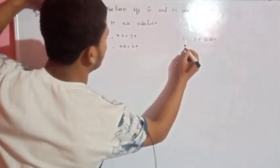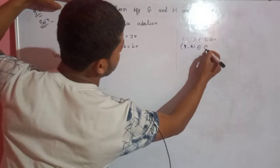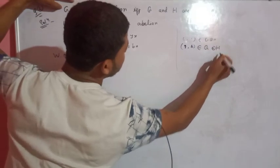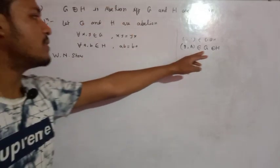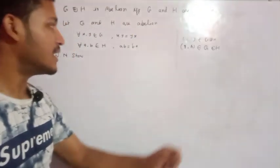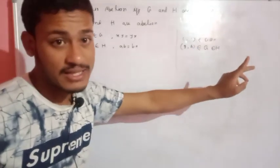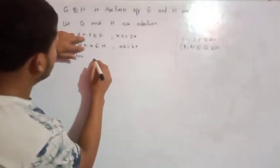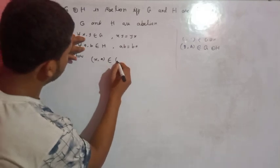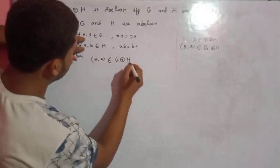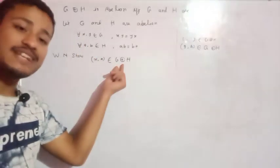An element of Z external direct product H is of the form (z, s), where z is from capital Z and s is from capital H. So (x, a) belongs to Z external direct product H.